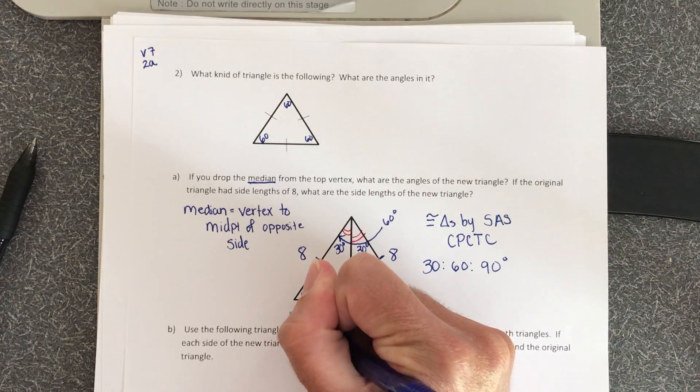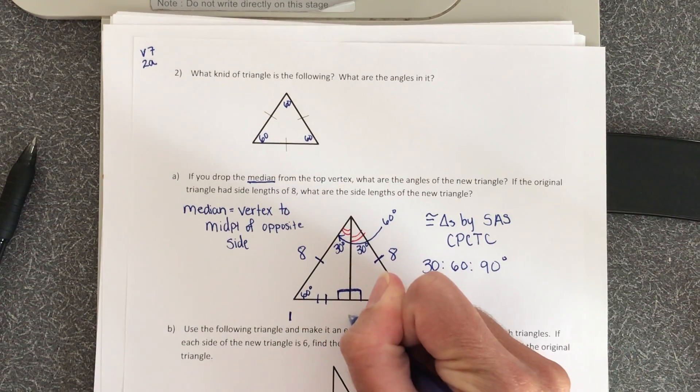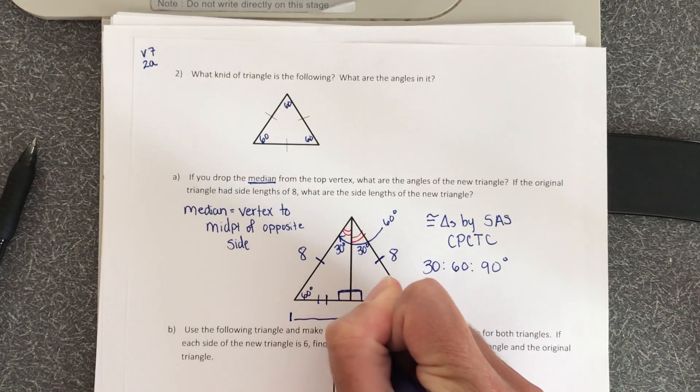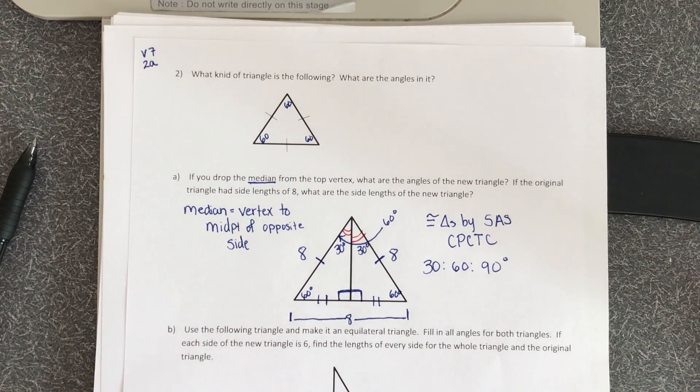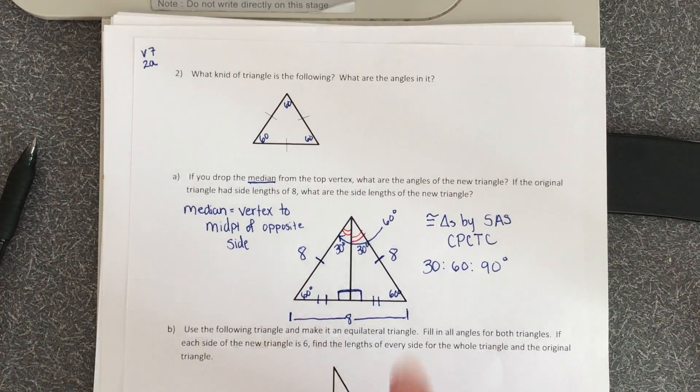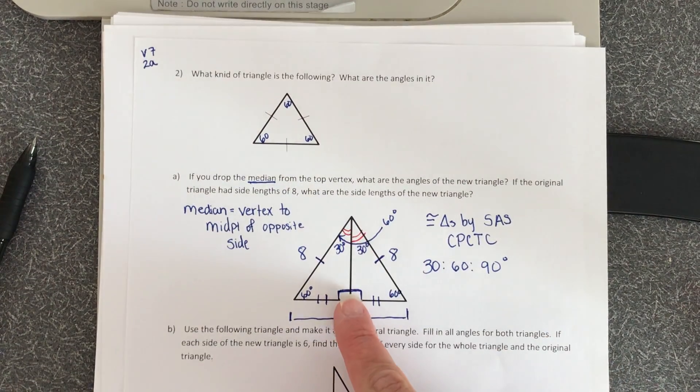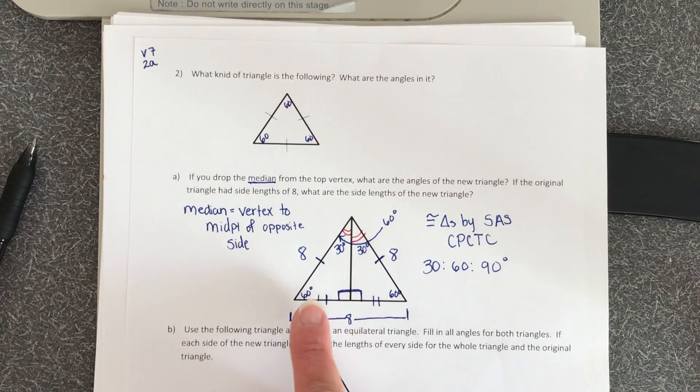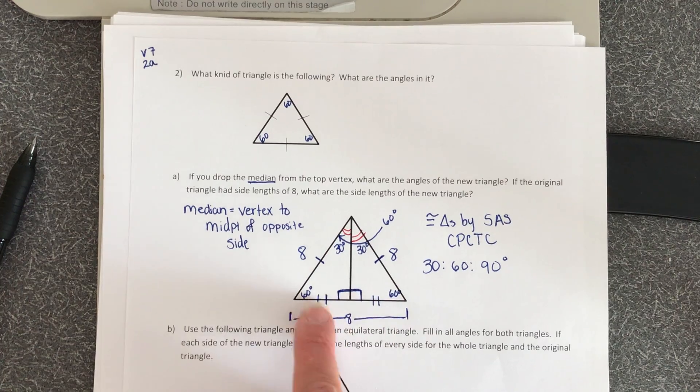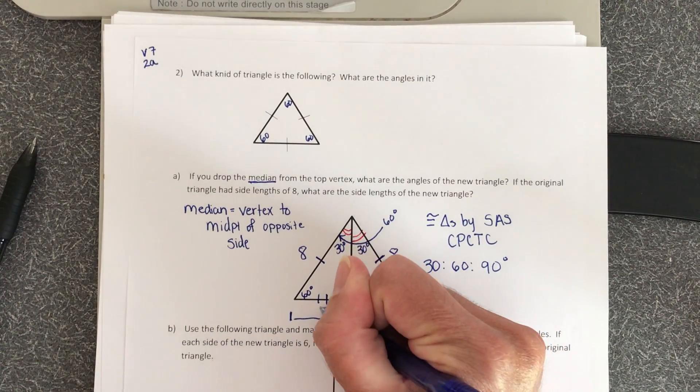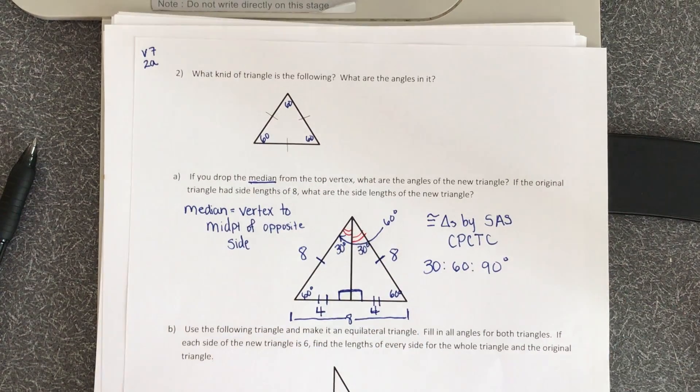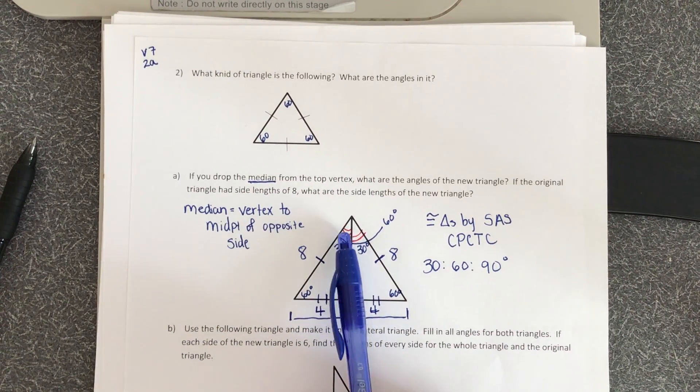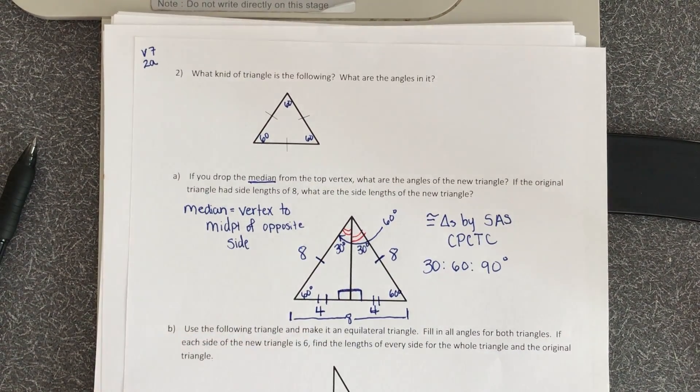So if the entire segment from here to here is eight units long, and that segment was cut into two congruent parts because the median dropped from the vertex down to the midpoint, then these two segments have to be four units long. Basically, the same justification for those angles being 30 degrees.